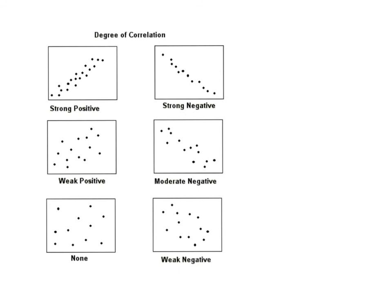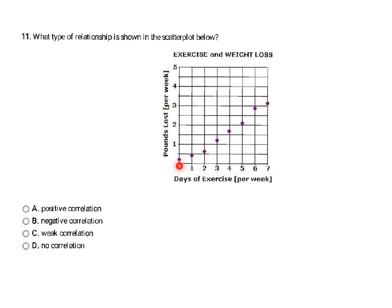Another type of problem you might see involves different types of correlation. Correlation is how well two things are related — for example, the more hours you study correlates to how good your test scores are, whereas hours studied and how much you weigh don't affect each other at all. You could have strong correlation, where data points are all close together, or weak correlation, where they're more spaced out. You can also have positive correlation, where data goes in an uphill line, and negative correlation, where it goes downhill. In this scatter plot, the line is going uphill, showing positive correlation, so the answer is A.